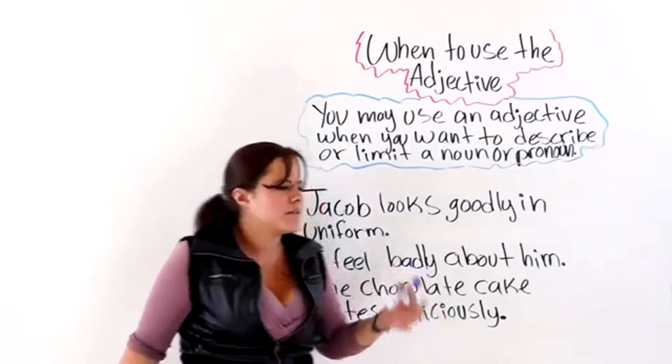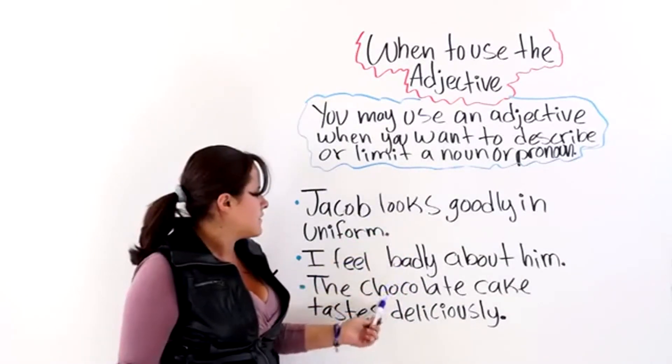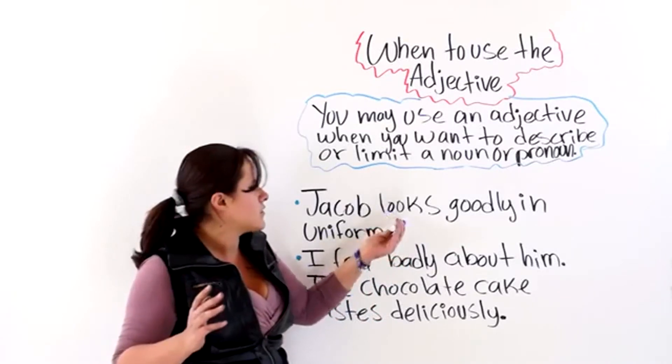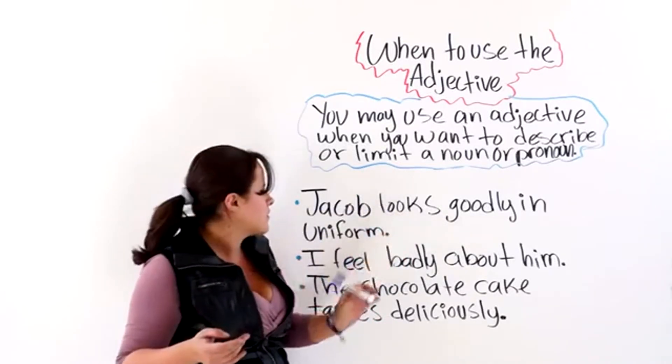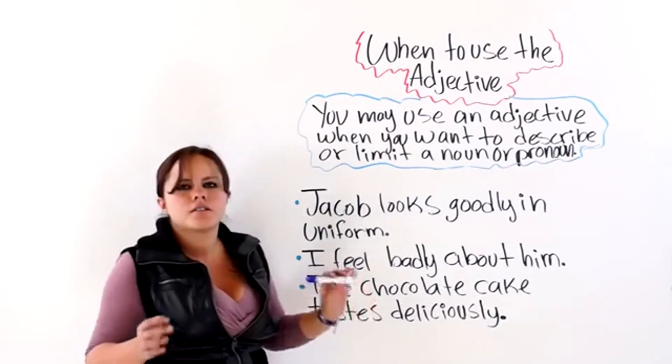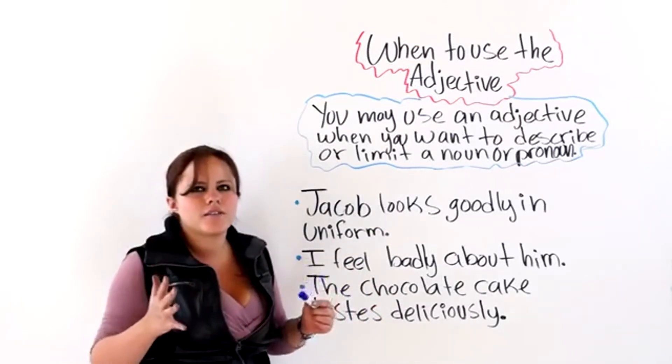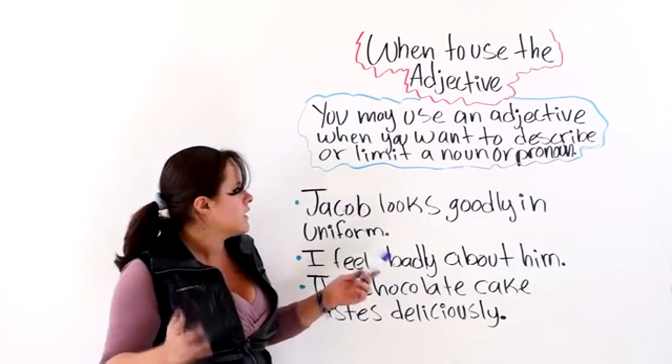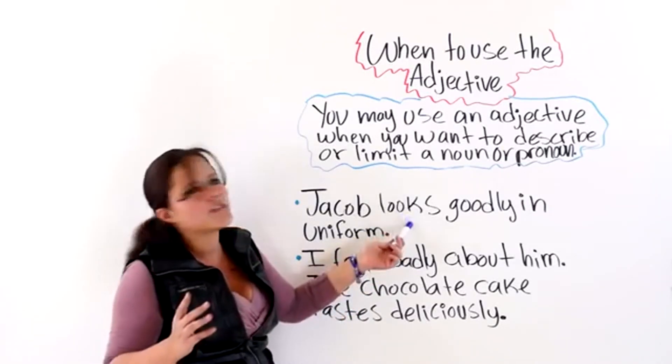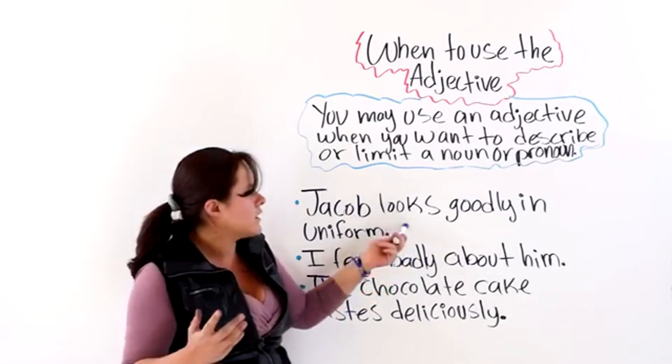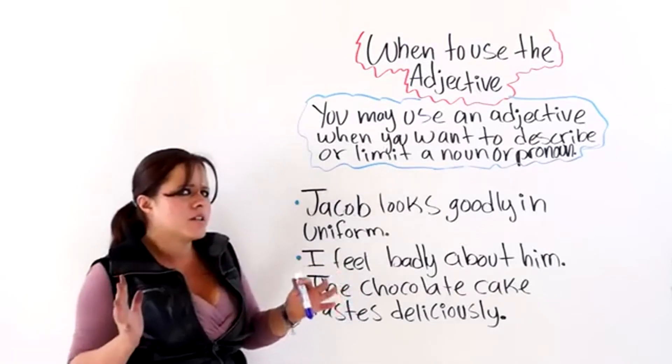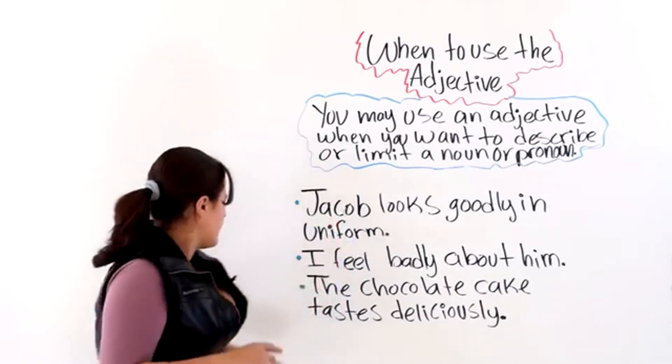Now you are going to help me correct these sentences. And notice that after a linking verb, for example, looks, feel, tastes, you must use an adjective and not an adverb. Even though it seems that you are describing the verb, you are not because it is a linking verb. So, you need an adjective, not an adverb. How awkward does this sound here?